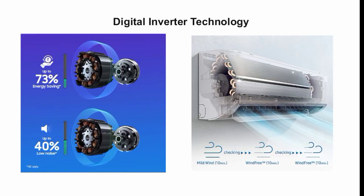Next is Digital Inverter Technology. Normally when an AC runs, there is a noise level. With Samsung's Digital Inverter Technology, the noise level is reduced by less than 40%. Additionally, this technology saves up to 73% energy compared to a normal AC.